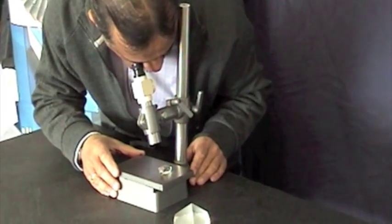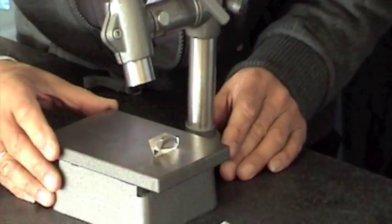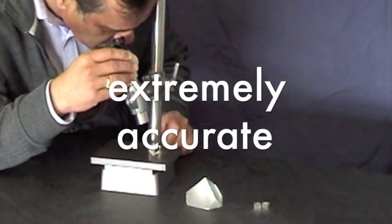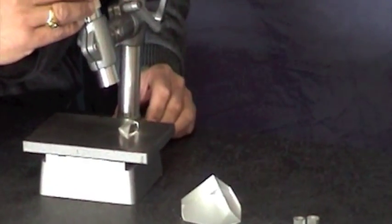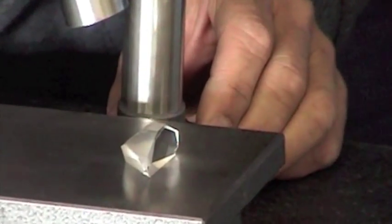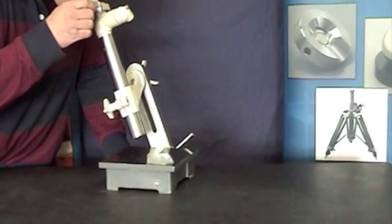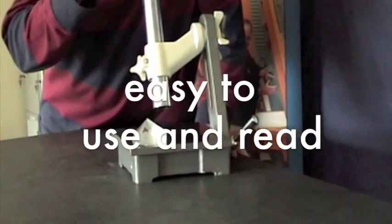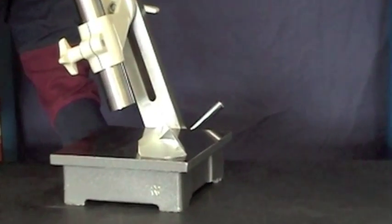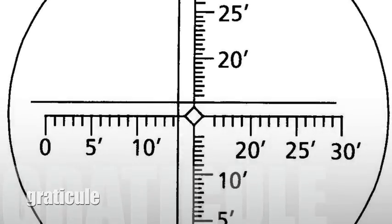Part of the range includes visual autocollimators. These are extremely accurate instruments with a wide variety of applications for checking straightness, flatness, and angular indexing. Supplied with an eyepiece, the system is easy to use and read by either using a graticule or a micrometer drum.